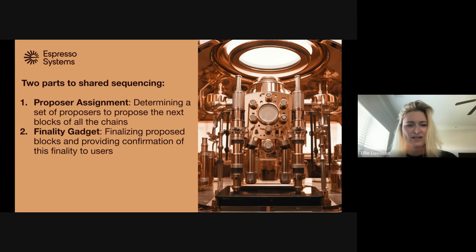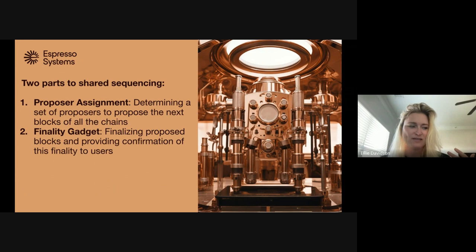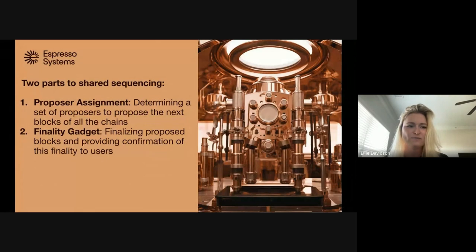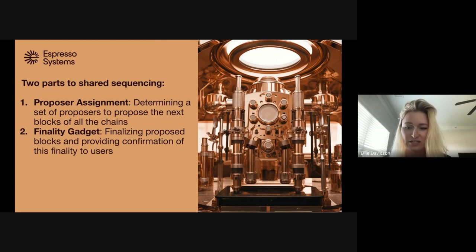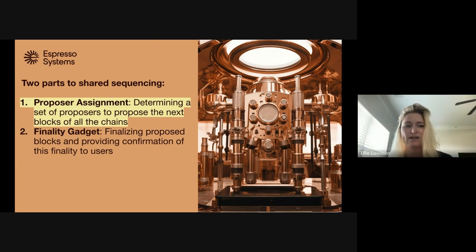There are two parts to shared sequencing. We use 'shared sequencing' to describe what it means to sequence for multiple rollups at once — in theory you could be sequencing for multiple L1s or L3s, but generally it's used in the context of L2s. You need some way to select who is going to be in charge of sequencing — generally this is the proposer — and then you also need some sort of finality gadget to commit what you sequence so it can never change. Most of this presentation focuses on the first one; the marketplace part is mostly based on the proposer assignment.